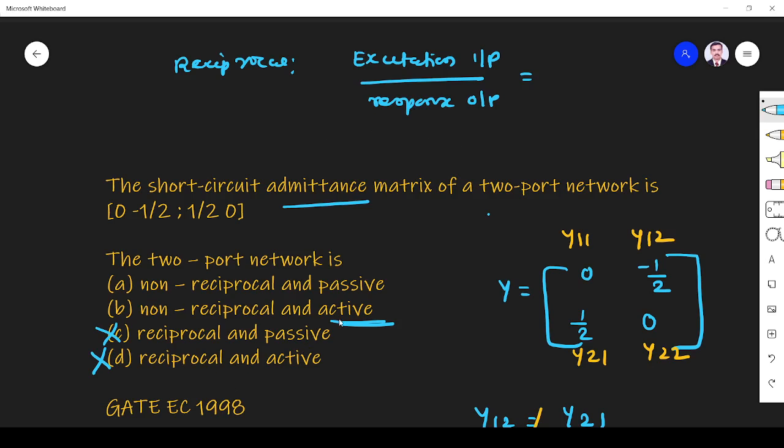So all the active networks are non-reciprocal networks, whereas passive networks like resistor, capacitor, inductor, they respond same for both the directions. So all the passive networks are reciprocal, active networks are non-reciprocal, so option B is the right answer. Thank you.